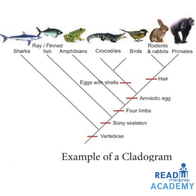Here you can see an example of a cladogram. All are vertebrates: sharks, ray-finned fish with bony skeletons, organisms with forelimbs like amphibians and beyond, organisms producing amniotic eggs like crocodiles, animals producing eggs with shells like birds, animals with hair like rodents and rabbits, and beyond them the primates.